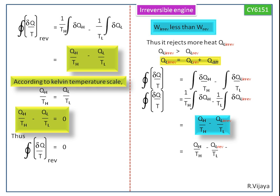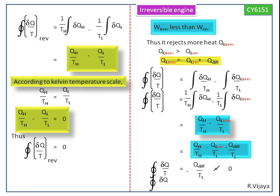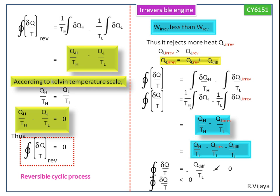Substituting that value in this equation, we get a new equation. We know that QH divided by TH minus QL divided by TL is equal to 0. So the cyclic integral of delta Q by T is equal to minus Q difference divided by TL. This is not equal to 0. So the cyclic integral of delta Q by T for an irreversible process is less than 0. Now we have proved Clausius' inequality: cyclic integral of delta Q by T is equal to 0 for a reversible cyclic process, and cyclic integral of delta Q by T is less than 0 for an irreversible cyclic process.